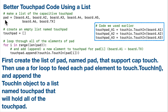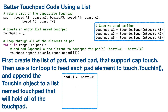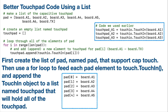This line up here — pad equals — gives us pad[0] equals board.A1, pad[1] equals board.A2, pad[2] equals board.A3, pad[3] equals board.A4, pad[4] equals board.A5, pad[5] equals board.A6, and pad[6] equals board.TX. Now each element of pad is just the location of the physical pad on the board. But remember, we need to create an object using this touch_in class, and we need to pass the location of a valid touchpad in order to create this touch_in object.